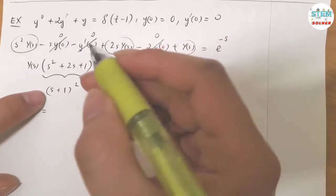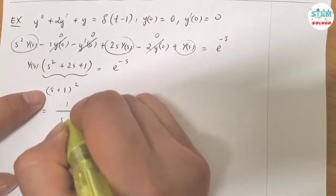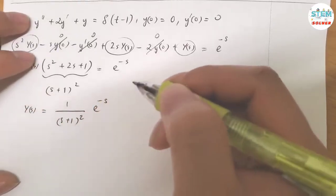Now divide both sides by this one. I have 1 over S plus 1 squared times E to the negative S.